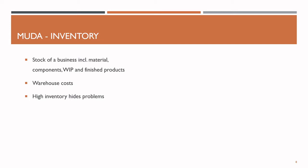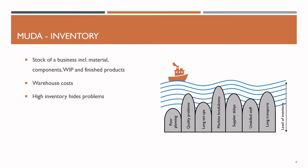We can imagine our production like a ship sailing over a body of water. The water level is the level of inventory. Under the virtual surface, big rocks are hiding that could harm our production ship. These rocks symbolize problems like poor planning, quality problems, long setups, machine breakdowns, supplier delays, unskilled staff, long transports, and so on. If we rely on inventory as a problem solver, the typical reaction to growing problems would be to raise the inventory. But this would harm our business – all the inventory we have is locked-up capital we cannot use to pay employees or buy new tools. So instead, we should reduce the level of inventory and work on the root causes of the problems that come to surface, forcing us to solve them rather than let them grow.